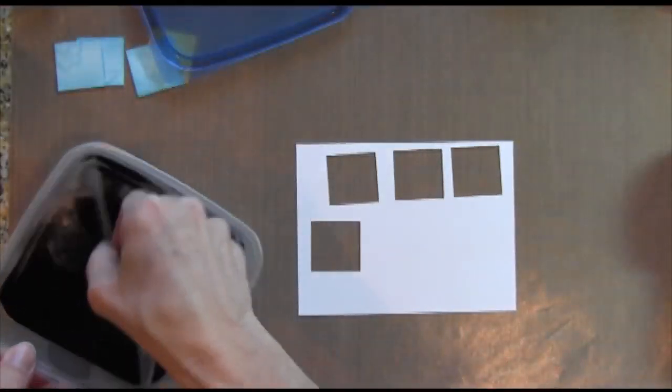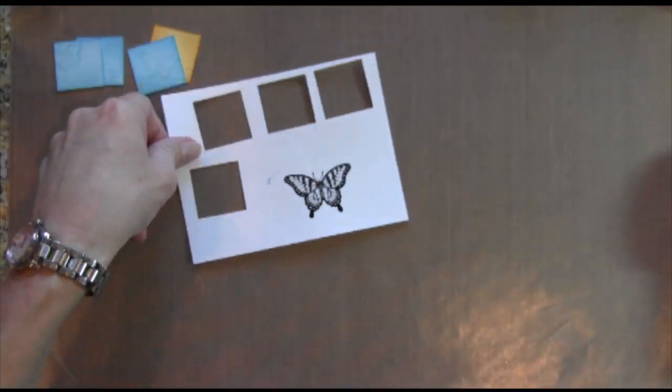This is another butterfly from the set and I'm using some Versamark ink and some black embossing powder. I'm going to heat it to set it.